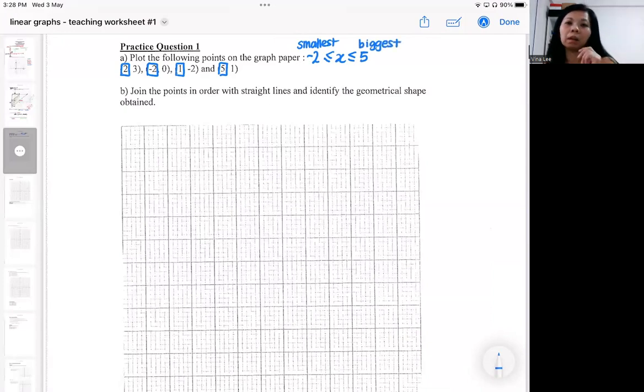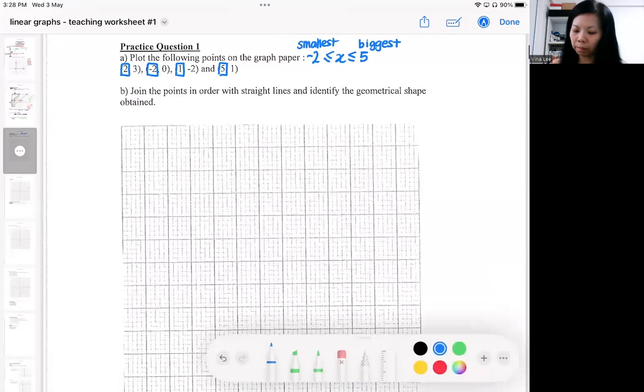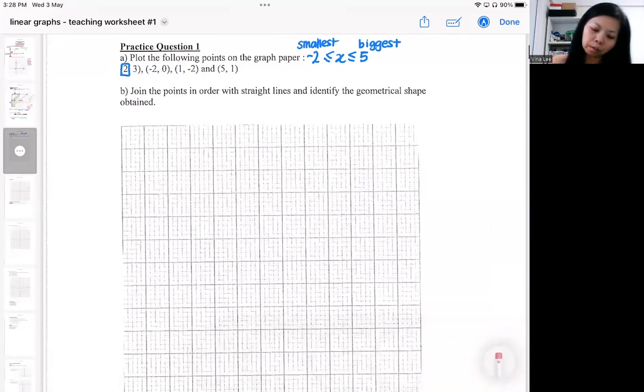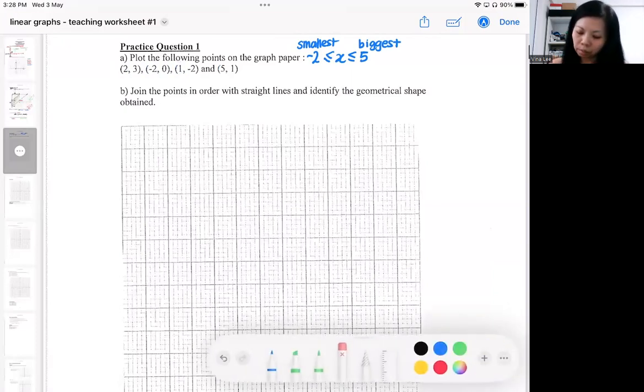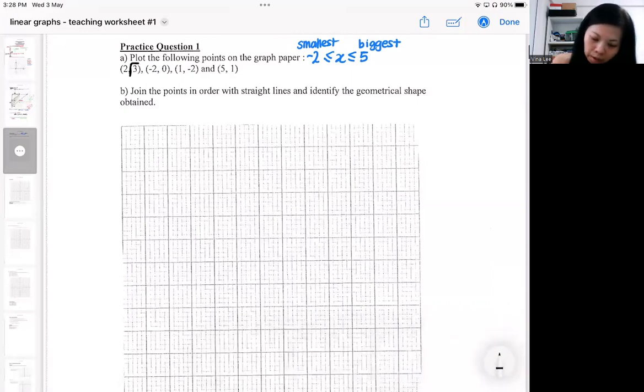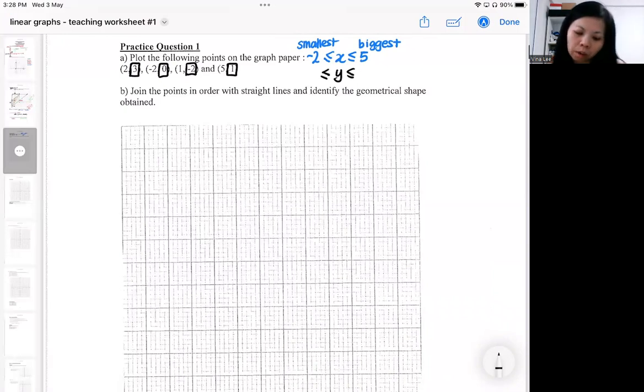So once you identify the smallest x and the biggest x, we need to change. Change now, we've got to identify the smallest y and the biggest y. Look at the y-coordinate. The smallest y will be minus two. The biggest y will be three.